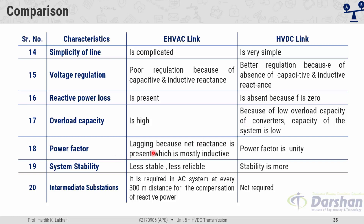The power factor of AC links is lagging because net reactance is mostly inductive, whereas the power factor of HVDC links is unity. Overall, AC links are less stable and less reliable, but DC links are more stable and more reliable. In AC links, an intermediate substation is required at every 300 km for reactive power compensation, but in DC there is no need for intermediate substations.